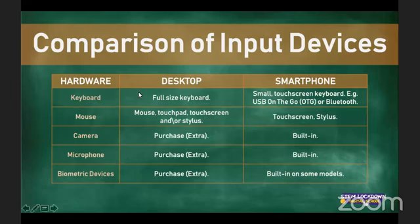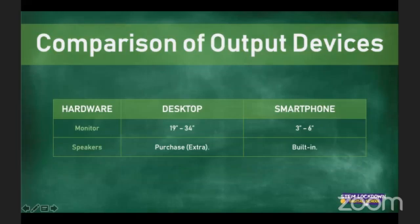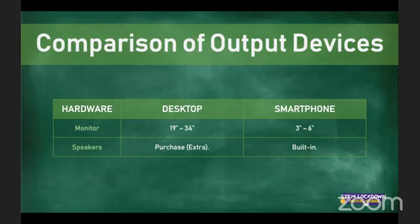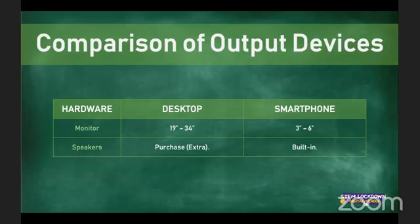For output devices, the most common comparison between desktop and smartphone is monitor size and speakers. It might be easier to watch a video on a desktop due to its larger screen. However, smartphones often have better resolution, so it's a catch-22 — the desktop screen may be bigger, but the smartphone image might be clearer.